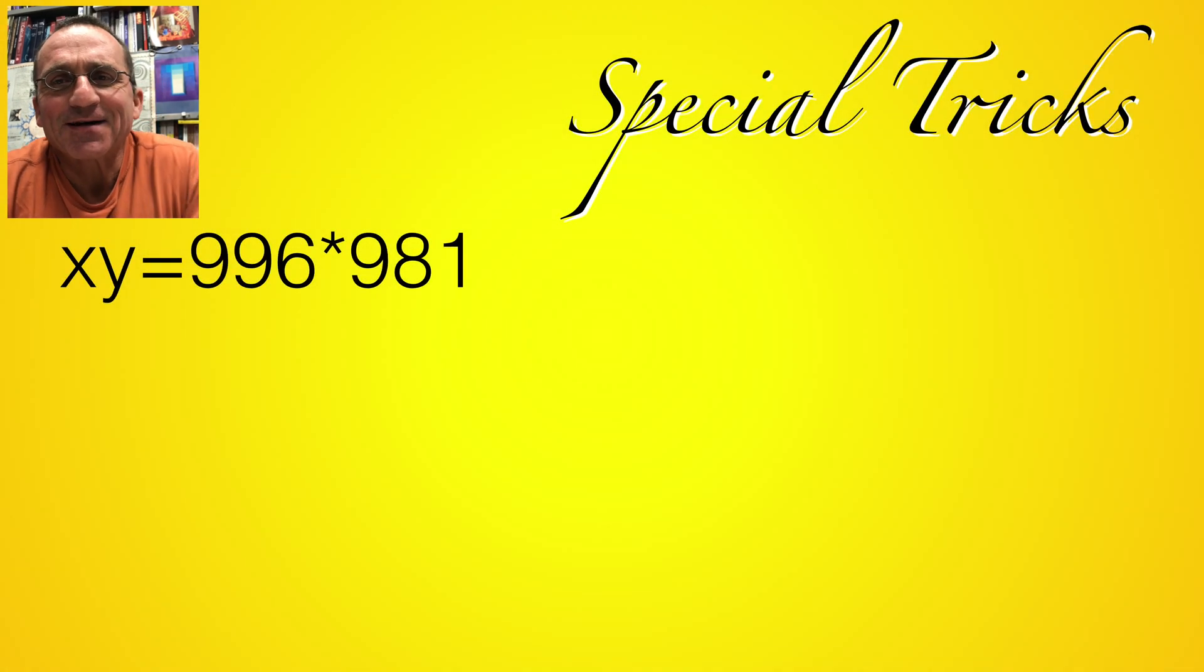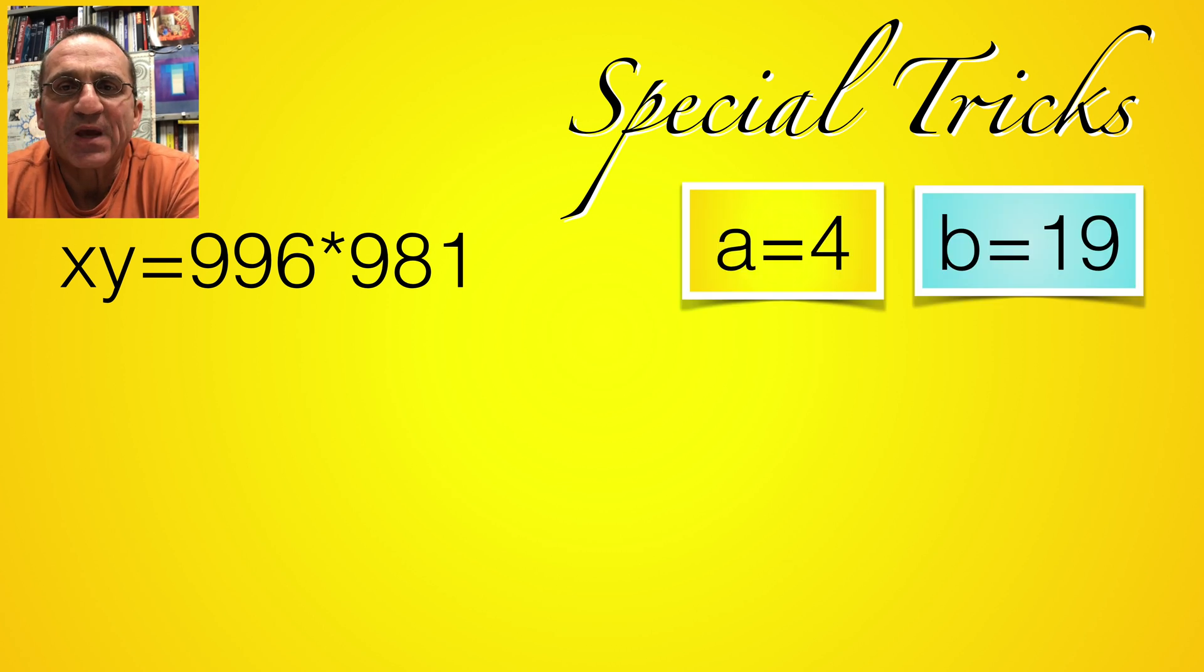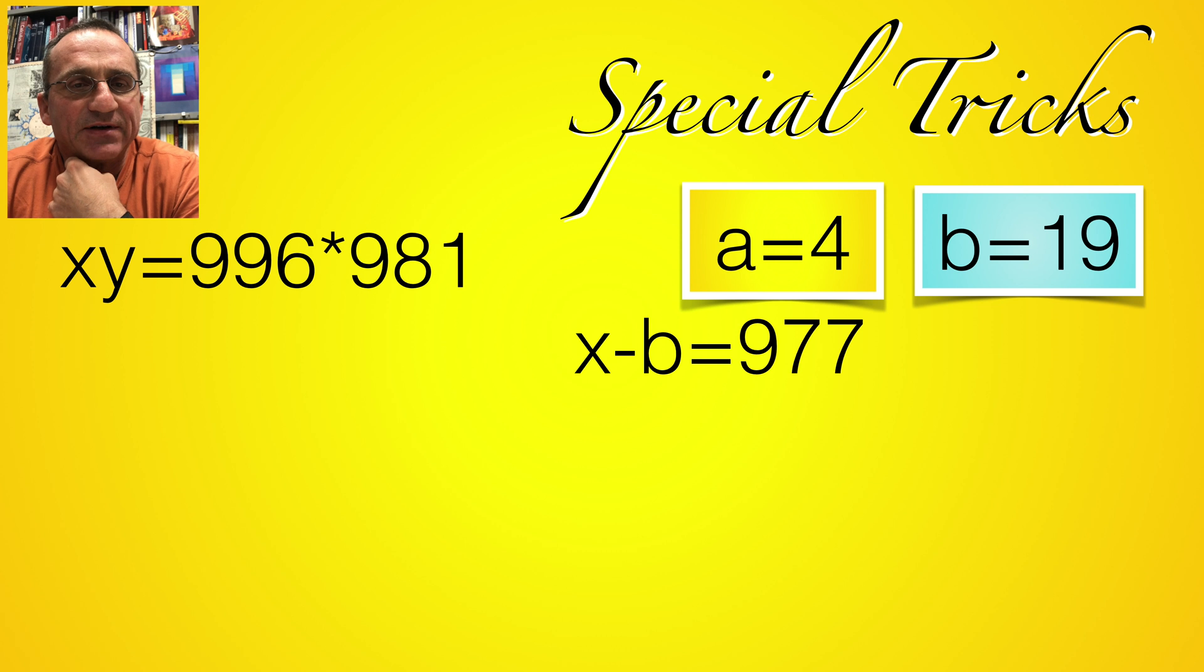So here's a trick I learned from a talk of Albert Beutelsbacher. If you want to compute a product of two numbers slightly smaller than 1,000, call a and b what you would have to add to get 1,000. We have 4 and 19, so these are a and b, and then now form x minus b. So x minus b, x is 996, minus 19 we form this, which is 977, and then we also form the product a and b, which is 76.